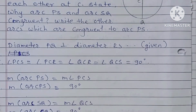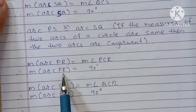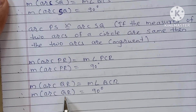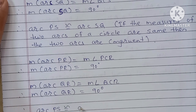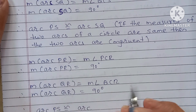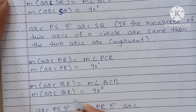The remaining congruent arcs are arc PR and arc QR. Therefore arc PS is congruent to arc PR and is congruent to arc QR.